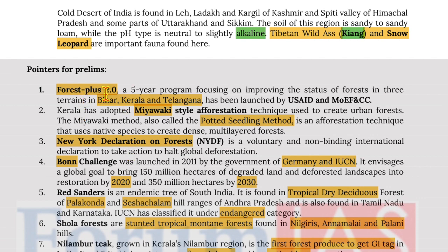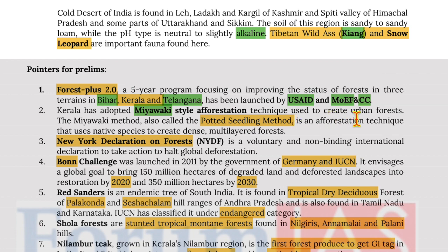Forest Plus 2.0 is a five-year program focusing on improving the status of forests in three terrains in Bihar, Kerala and Telangana, launched by USAID and the Ministry of Environment, Forest and Climate Change.